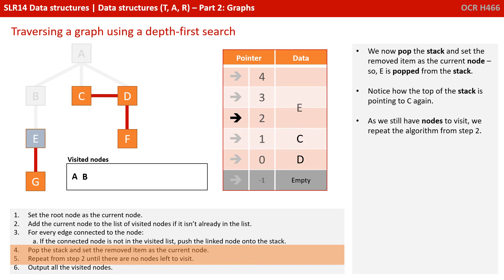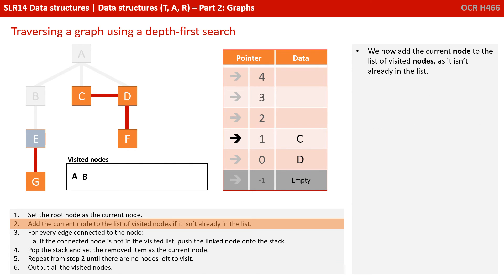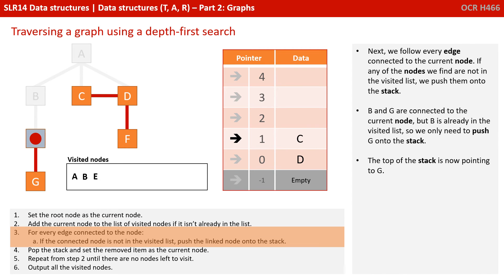We now pop the stack and set the removed item as the current node, so E is popped from the stack. Notice how the top of the stack is back pointing at C again. We still have nodes to visit, so we repeat from step 2. We add E to the list of visited nodes. B and G are connected to the current node, but B is already in the list, so we only push G onto the stack. The top of the stack is now pointing at G.